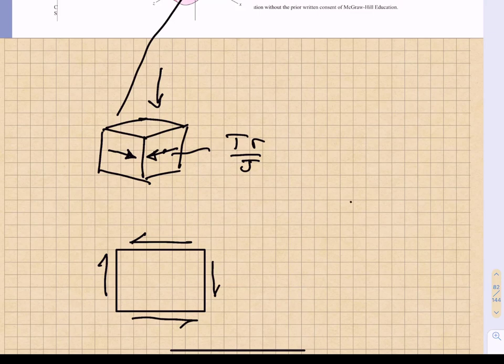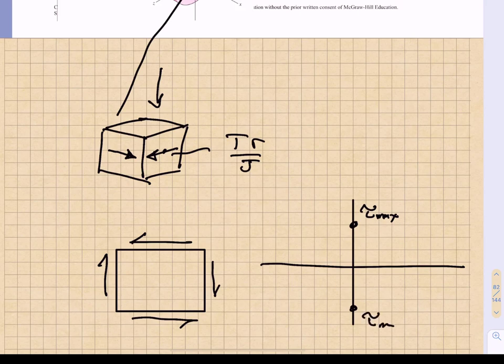And if we were to plot that in Mohr space, you know that we would have an element in pure shear. And so we would have tau max, which is just this Tr over J, another tau max right here.